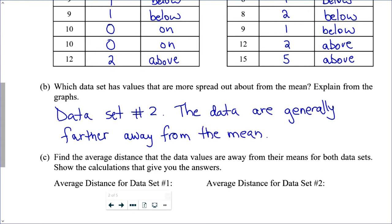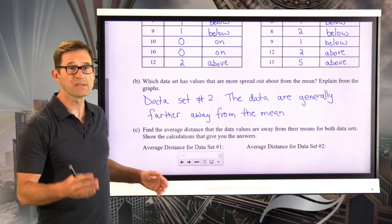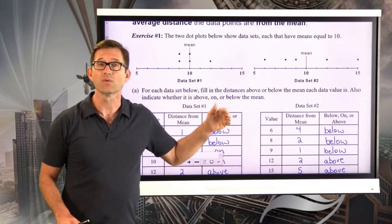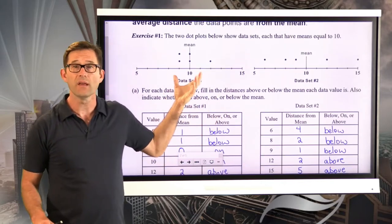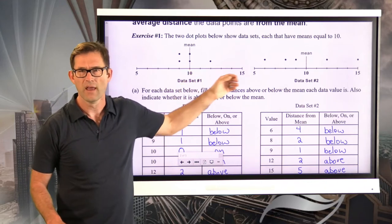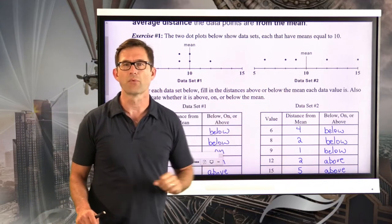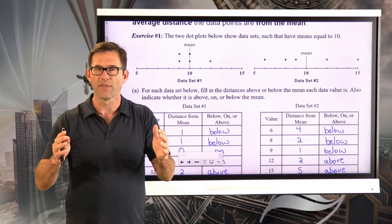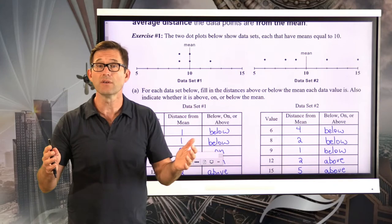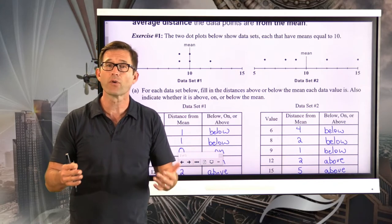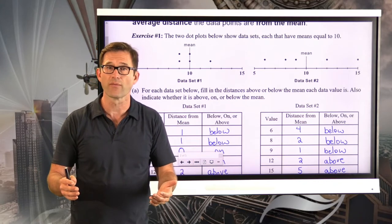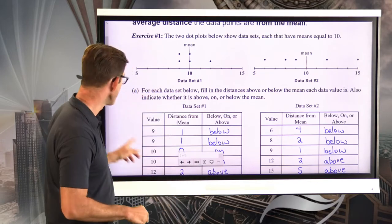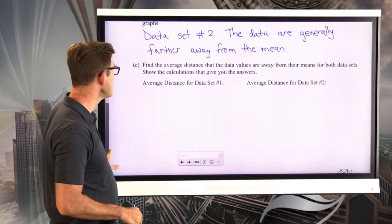We could tell that right away by just looking at these data sets — the data here is very close and tightly grouped to the mean, and here it's way more spread out. But we want a number that can encapsulate that. The easiest thing to do is ask: what is the average distance the data points are away from the mean? Or what is the mean distance the data points are away from the mean? Let's do that now in letter C.